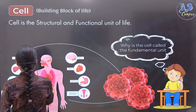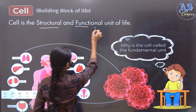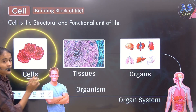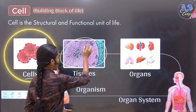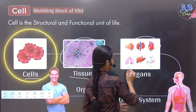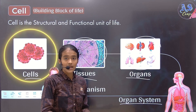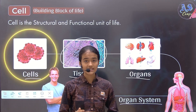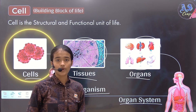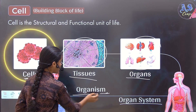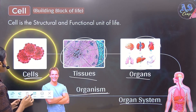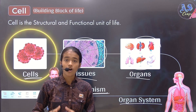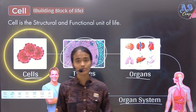Cell is known as the structural and functional unit of life because a group of cells makes a tissue, a group of tissues makes various organs, organs make organ systems, and finally organ systems make a whole organism. This means that cells are very important for forming a whole organism. It is also known as the functional unit of life because cells are capable of performing various functions in the human body.